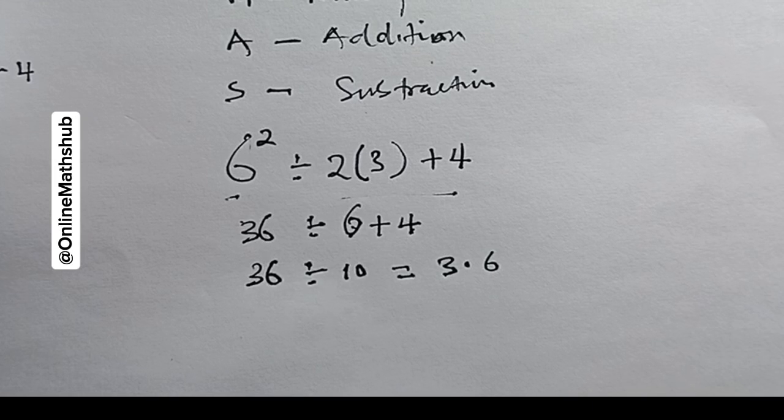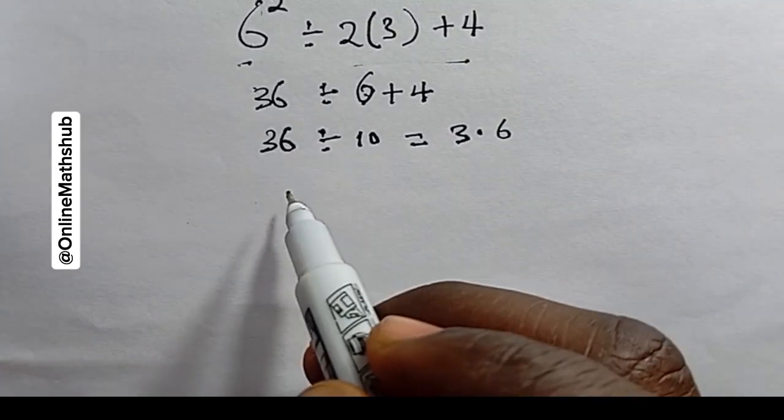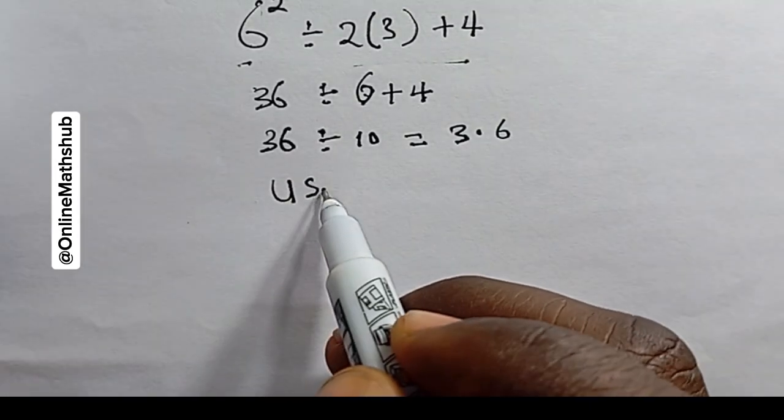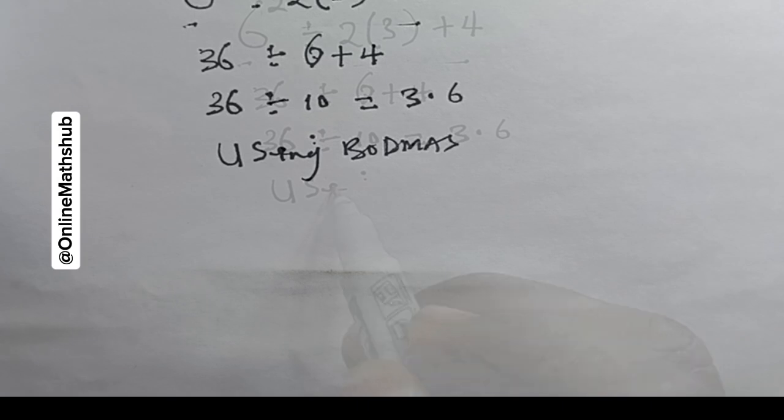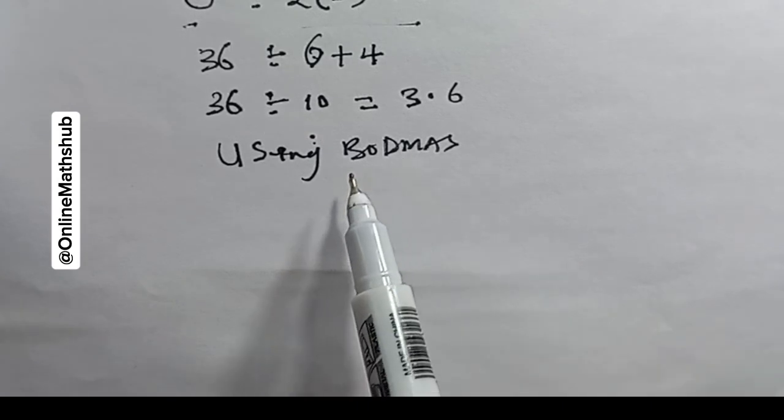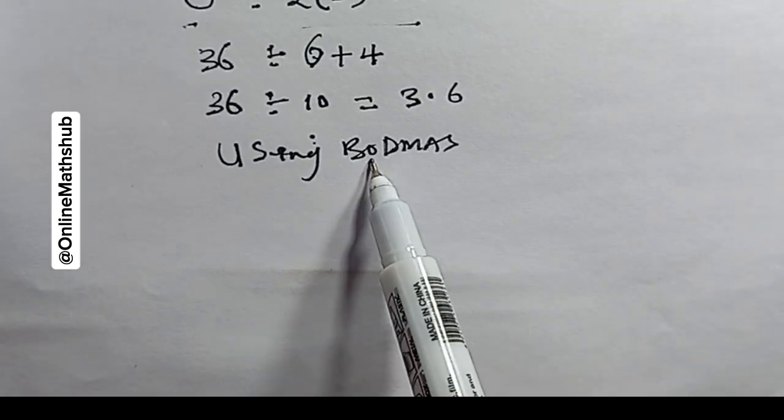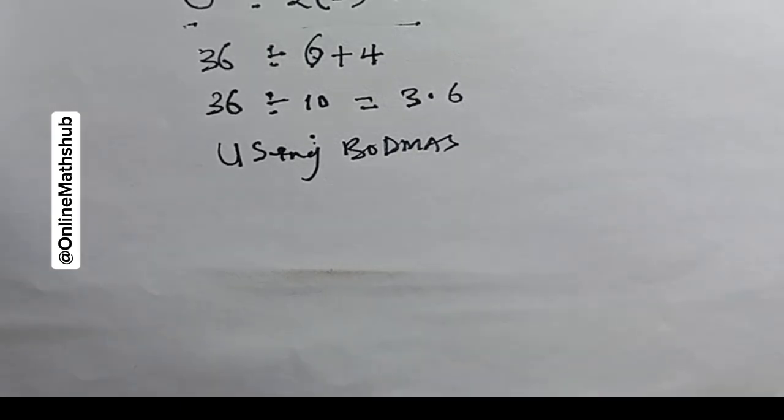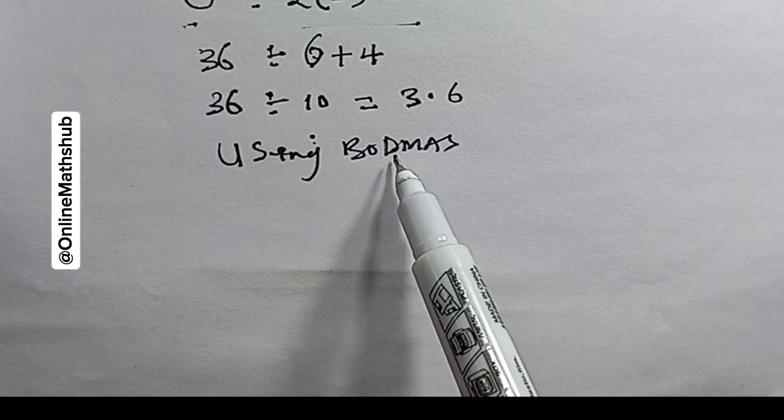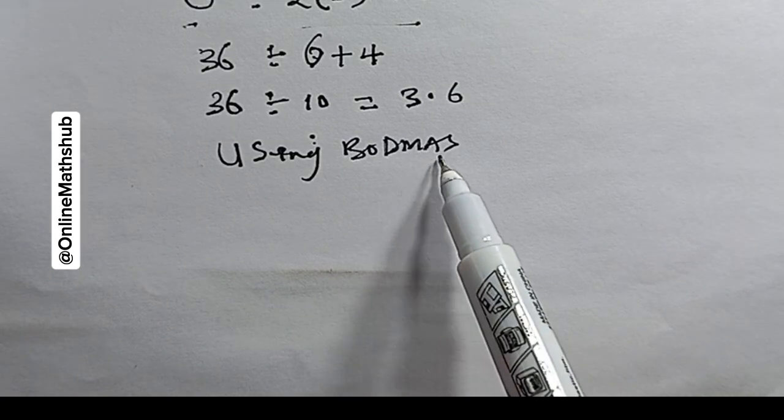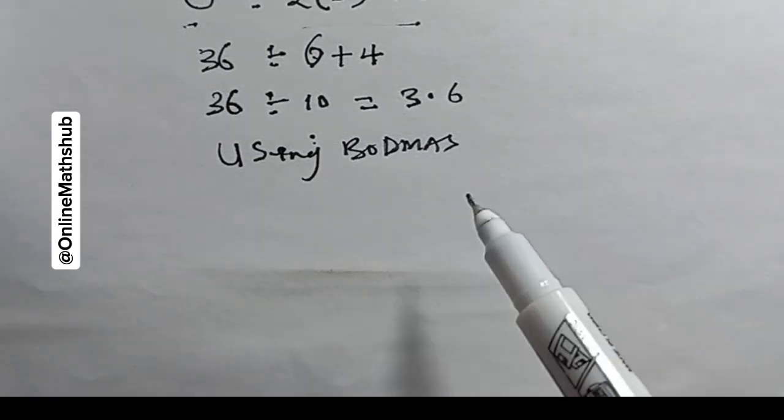If you want to use BODMAS, the first thing you do is simplify the Bracket, then the exponent (O), followed by Division, Multiplication, Addition, and Subtraction.